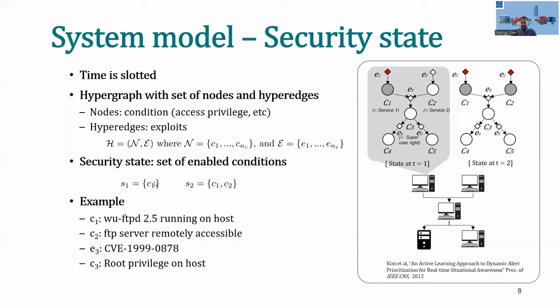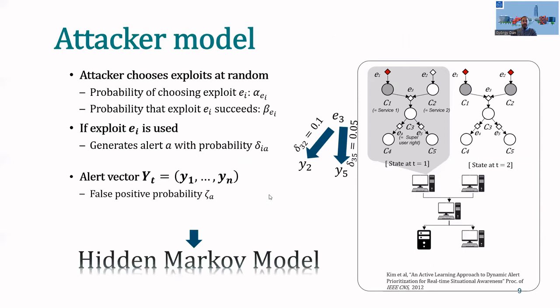To give you a pragmatic example, imagine that condition C1 is that a particular version of an FTP daemon is running on a particular host. And condition C2 could be that the FTP server is actually remotely accessible. Now, what could be the exploit? The exploit could be, for example, the CVE-1999-0878 exploit that is known to be effective against this particular version of the FTP server. If executed, this exploit would give root privilege on the target host to the attacker, in which case C3 would also be enabled and we get to a new state.